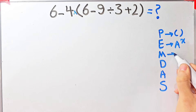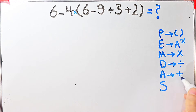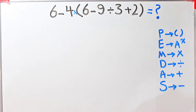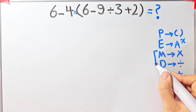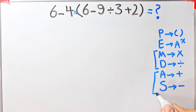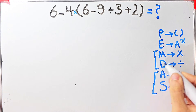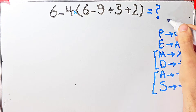In PEMDAS: P stands for Parentheses, E stands for Exponent, M stands for Multiplication, D stands for Division, A stands for Addition, and S stands for Subtraction. Multiplication and division have the same level of priority, and addition and subtraction have the same level of priority. When we have both in an expression, we start from the left.